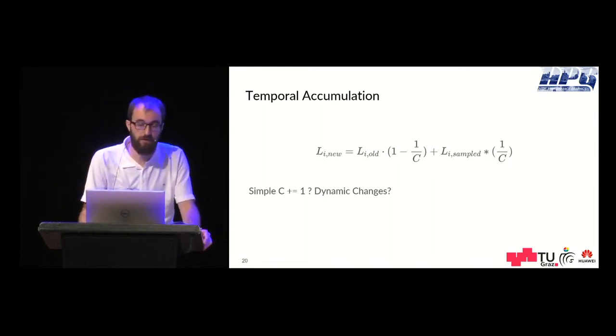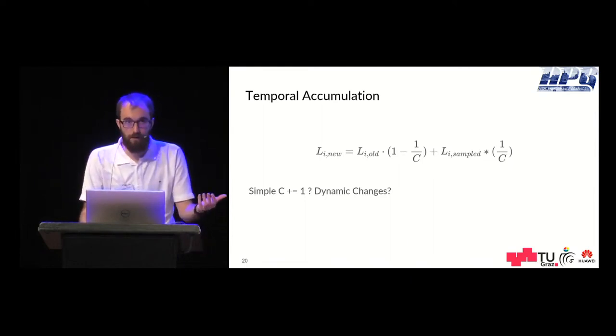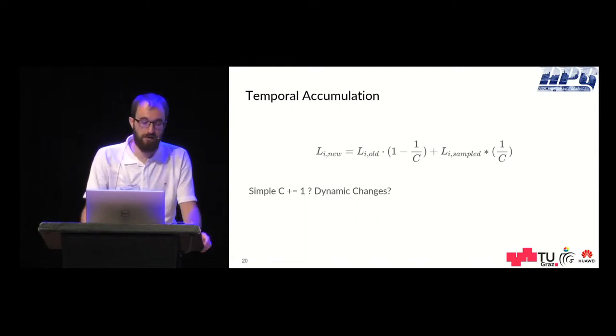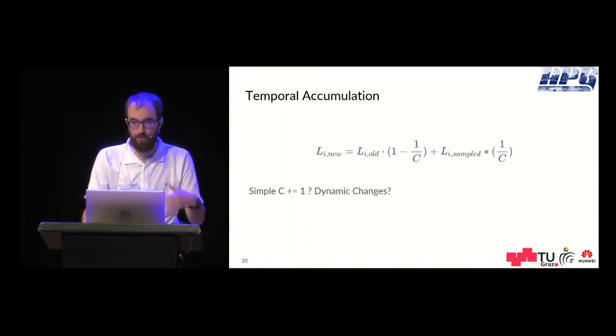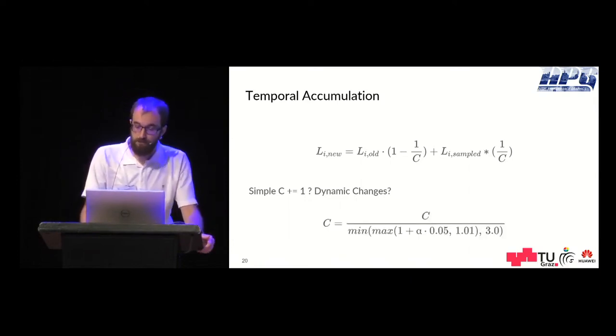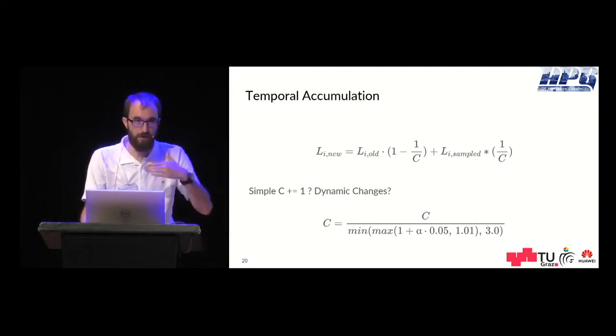This factor is based on the accumulation count. So the question is if we can simply increase the accumulation count. And this is not the case when dynamic changes happen because newly added radiance wouldn't be that quickly integrated into our representation and that's a problem.